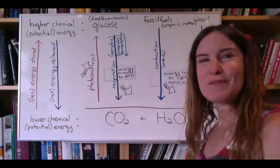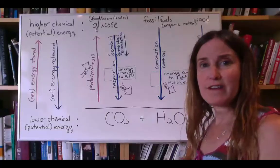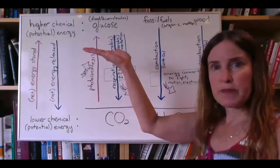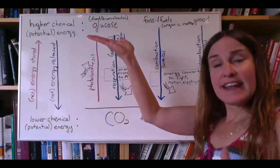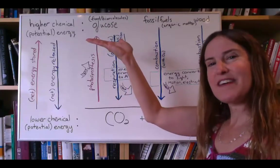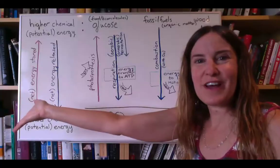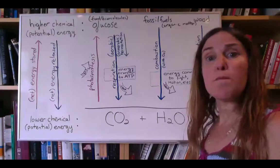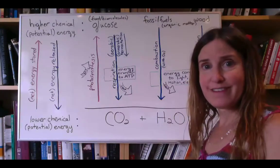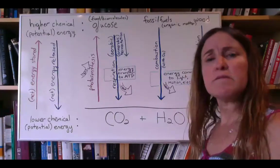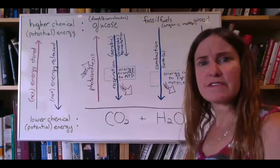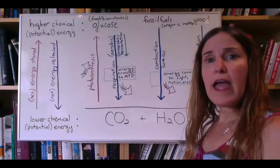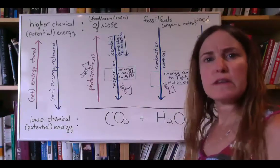You might recall the term potential energy associated with something like a roller coaster. We use some form of energy to push the roller coaster to the top of the hill, and it has this high level of potential energy until we give it one more push and it starts to roll down the hill. That potential mechanical energy is converted to the motion of the roller coaster, and a little bit of that energy—because it's an imperfect, inefficient system—will be released through friction on the rails, with some sound and heat released that way.